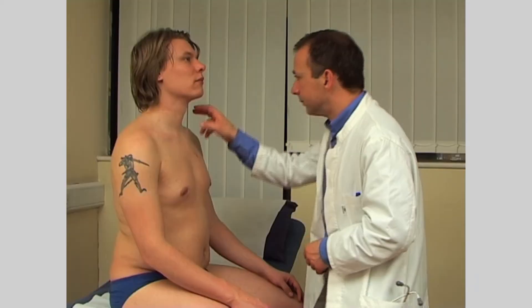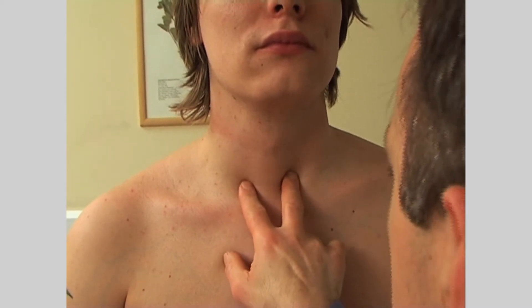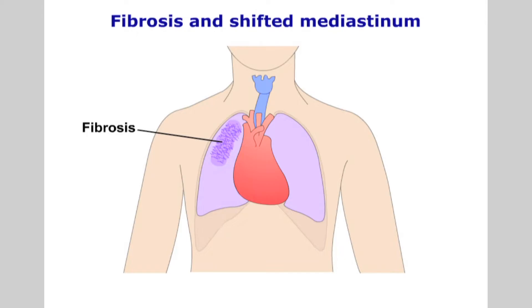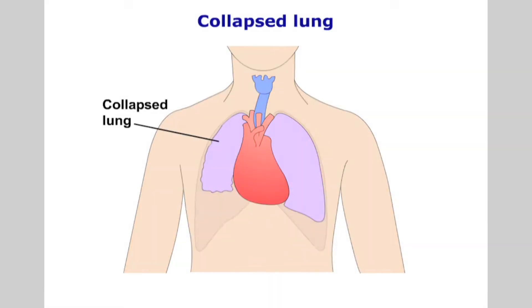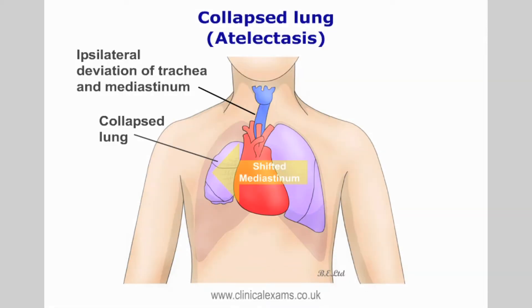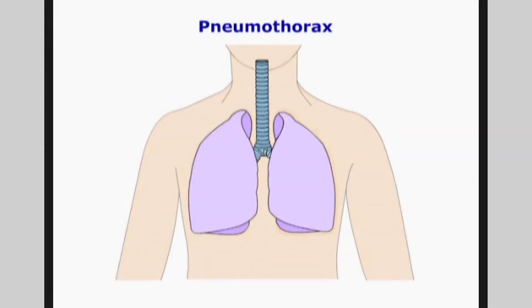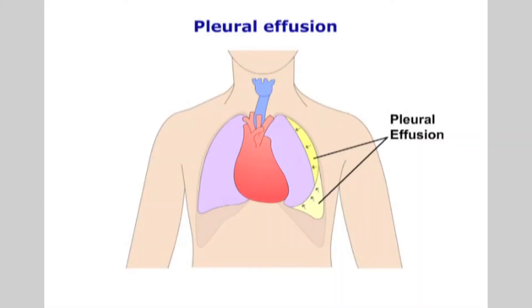Palpate the trachea to determine whether its position is central, and with one finger gently feel its position at the sternal notch. The trachea may be displaced laterally. Fibrosis pulls the mediastinum towards the lesion. Similarly, a collapsed lung pulls the mediastinum towards the lesion. Pneumothorax pushes the mediastinal contents away from the lesion. Likewise, a large effusion will push the mediastinum away from the lesion.